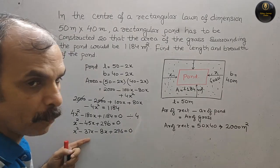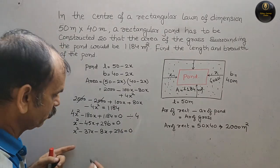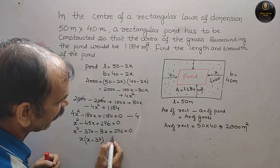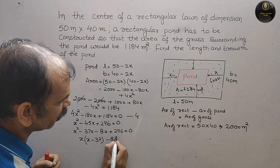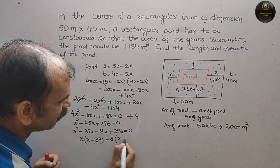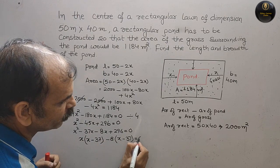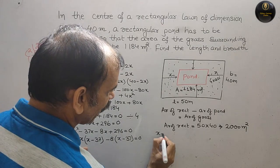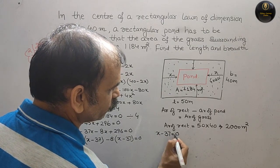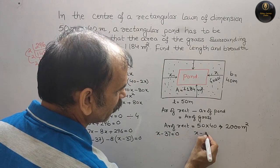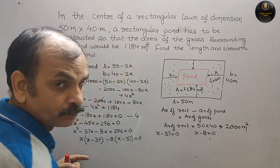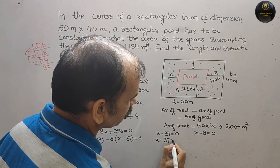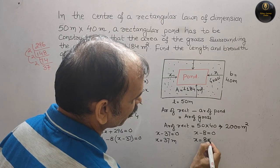Taking common factors: x(x − 37) − 8(x − 37) = 0, giving (x − 37)(x − 8) = 0. So x = 37 or x = 8.